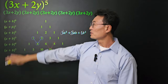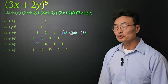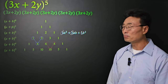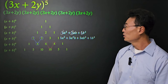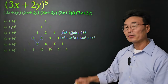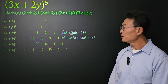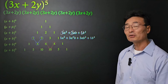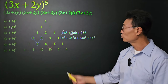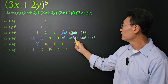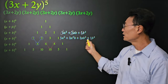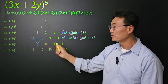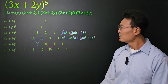If we do (a + b) to the third power, we get 1a cubed plus 3a squared b plus 3ab squared plus 1b cubed, where again the 1, 3, 3, and 1 appear in Pascal's triangle.